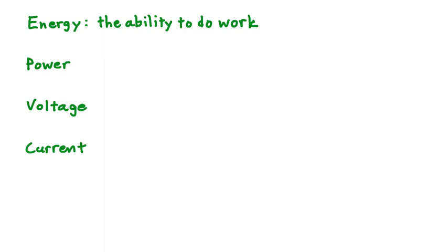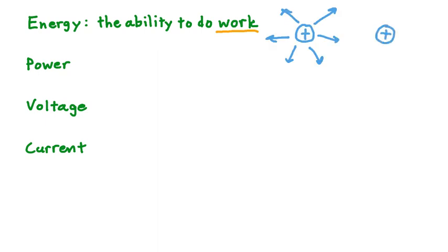For starters, we can remember that energy is defined as the ability to do work. This work could be mechanical work, such as moving a mass up a hill, or it could be electrical work. An example of electrical work would be moving a charge while it's in the presence of an electric field. The analogy would be moving a mass in the presence of a gravitational field.